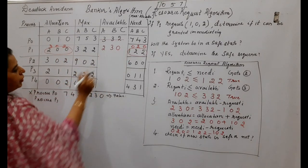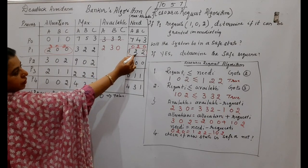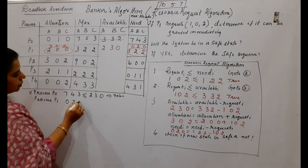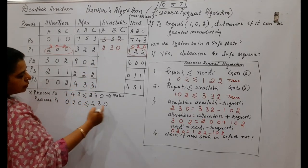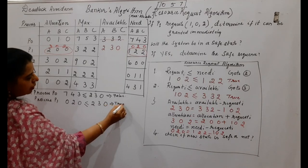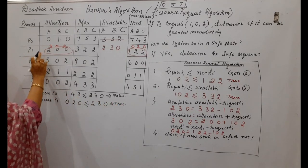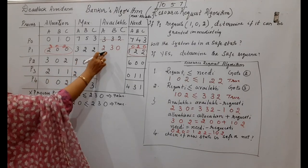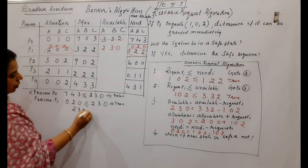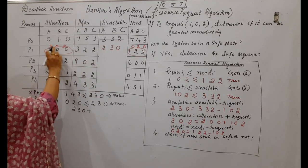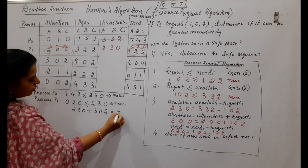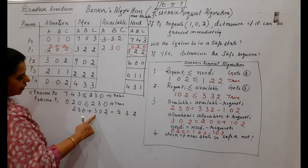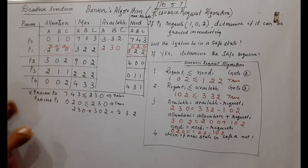P1's updated need is 0,2,0 — do not use the old value. Check: 0,2,0 ≤ 2,3,0 — this is true. So available becomes available plus P1's allocation: 2,3,0 plus 3,0,2 equals 5,3,2. Update available to 5,3,2. P1 has completed.